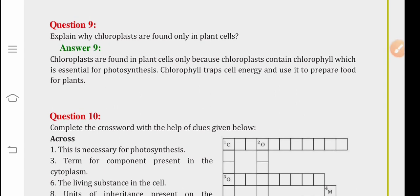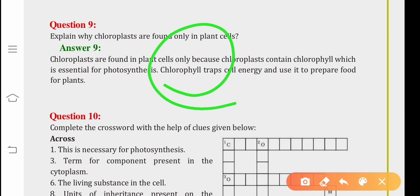Question number nine, explain why chloroplasts are found only in plant cells. Chloroplasts are found only in plant cells because of the process of photosynthesis. The chloroplasts contain a pigment known as the chlorophyll which trap sun's energy and use it to prepare food for the plant.